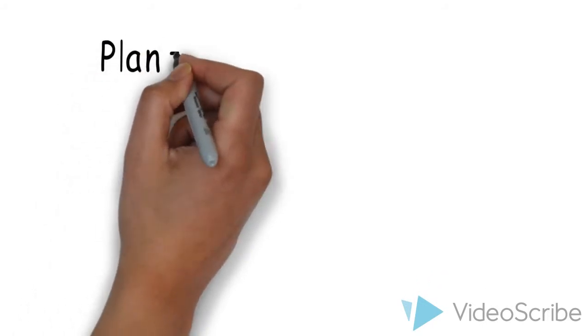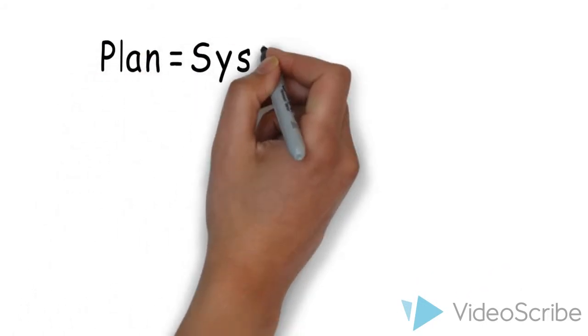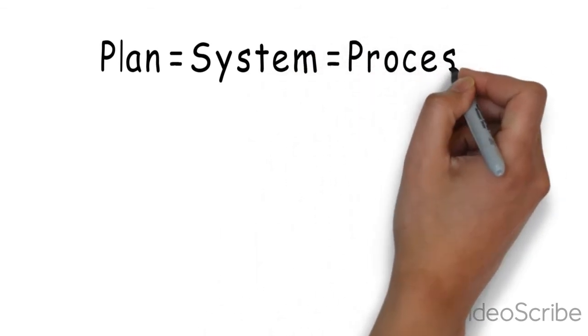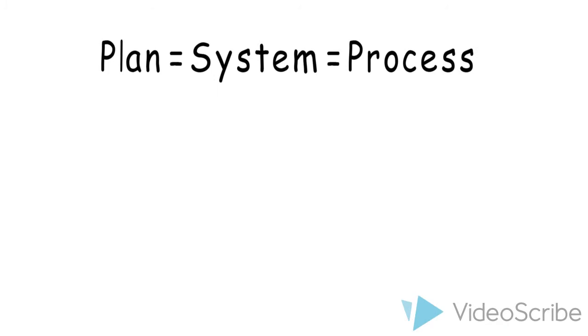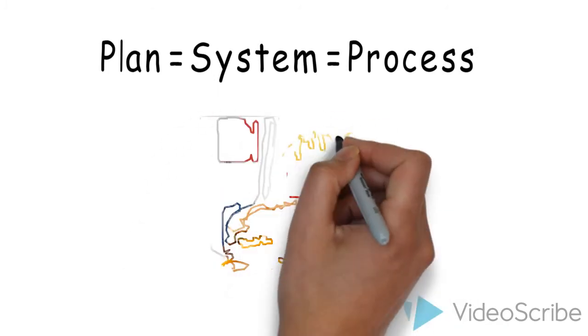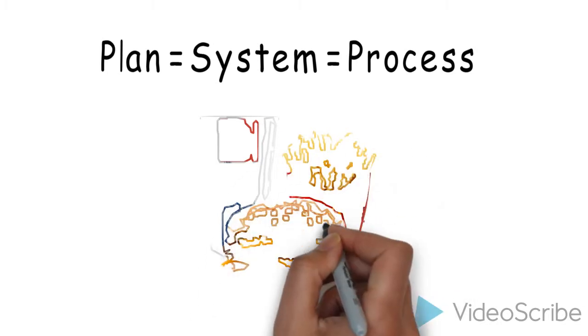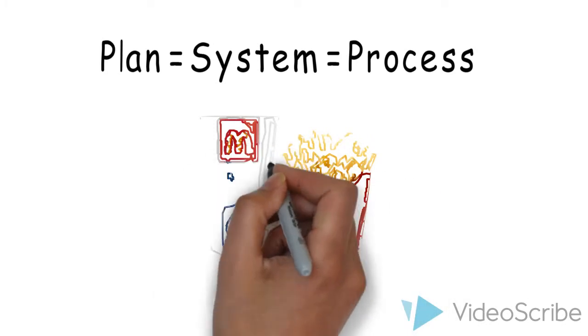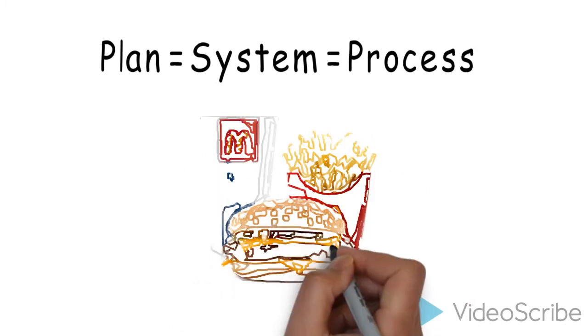And why is a plan so important? A plan creates a system and also defines the process. And when you think of large companies that are very successful, you think of possibly McDonald's. And obviously, they have a system including, do you want fries with that? Supersize it that convert that customer into more business.